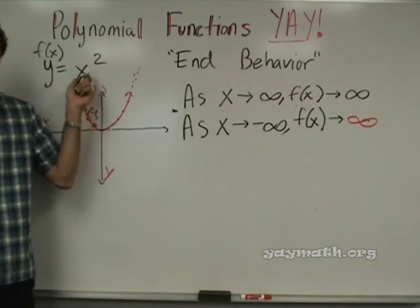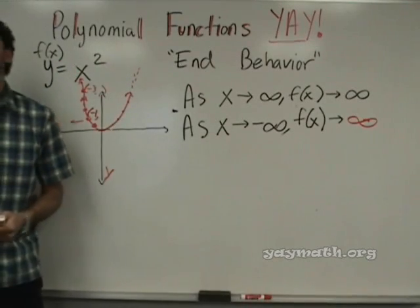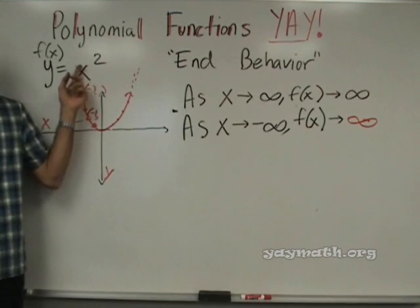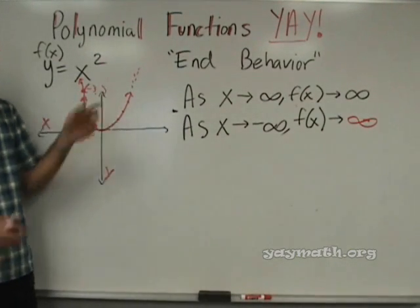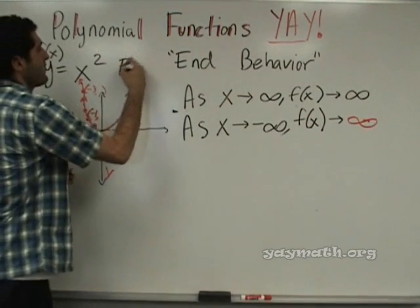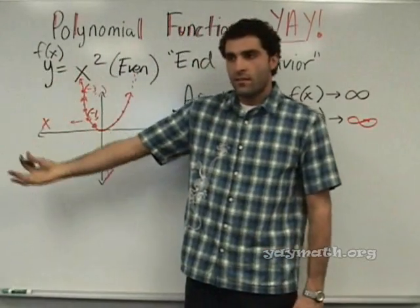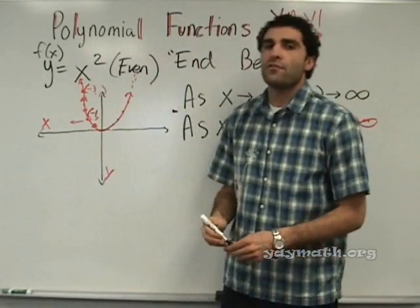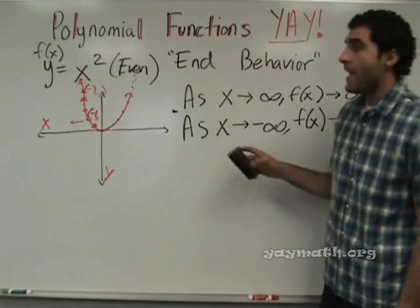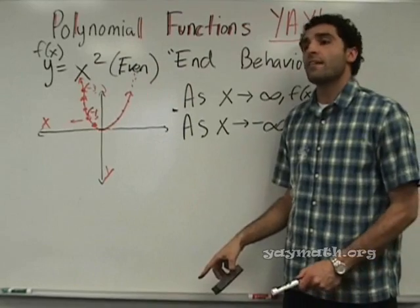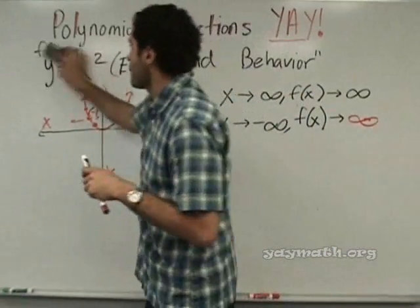Which is an even function. Even meaning the degree is 2. It would be an odd function if it's X to the 3rd. Good — that's exactly where I was going. If you have X squared, or X to the 4, or X to the 6 and something after it, those are called even functions. An odd function would be X to the third, or X to the ninth, or X to the fifth, or seventh — any odd number. X to the 1 is odd, X to the 2nd is even, X to the 4th is even, X to the 3rd is odd. So we just did the end behavior for a parabola. Now I want to show you some more.